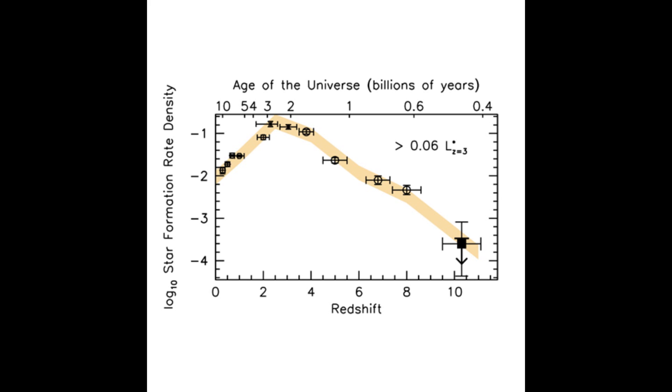The rate at which stars formed was low at first, but then it increased until about 10 billion years ago. Since then, the rate at which stars form in the universe has been decreasing.